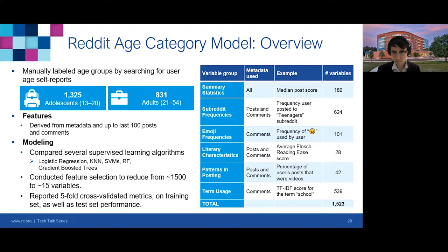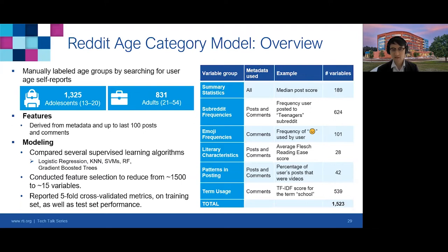With the labeled data, the next step is to generate variables that could help distinguish between teens and adults on Reddit. These include vocabulary used in the user's posts and comments, and what subreddits they most commonly posted to or commented on. We then tested several supervised learning algorithms. To aid in interpretation and reduce future data pipeline maintenance, we performed variable selection and were able to reduce the set from over 1,500 variables to 15 without a significant drop in performance. To evaluate performance, we used cross-validation as well as a test set.